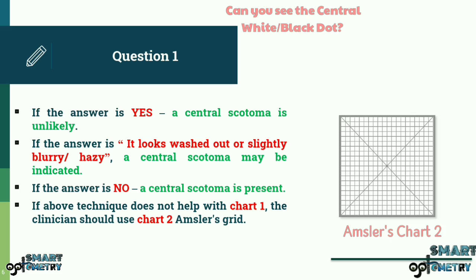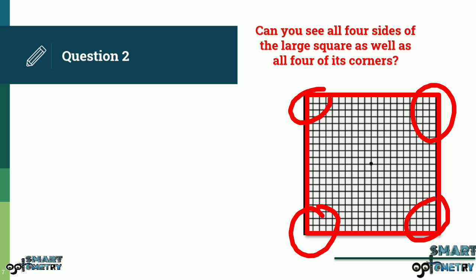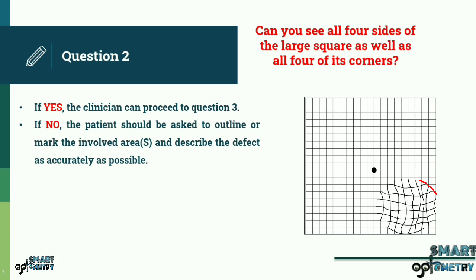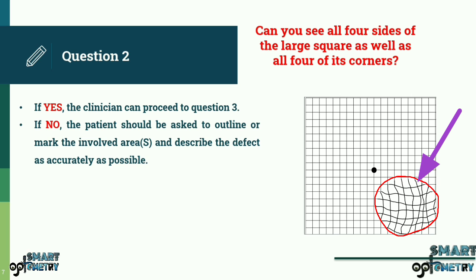Question 2: Can you see all four sides of the large square as well as all four of its corners? The patient is asked to continue looking at the central dot while answering. If yes, the clinician can proceed to question 3. If no, the patient should be asked to outline or mark the involved area or areas and describe the defect as accurately as possible — for example, the left corner of the chart is covered by a black or white wavy cloud on looking at the white dot.